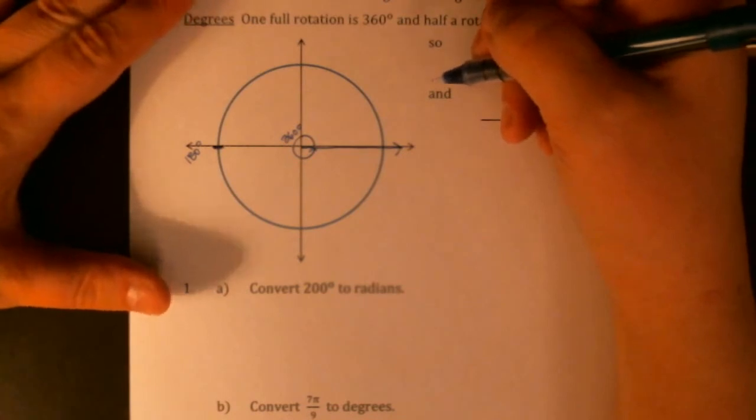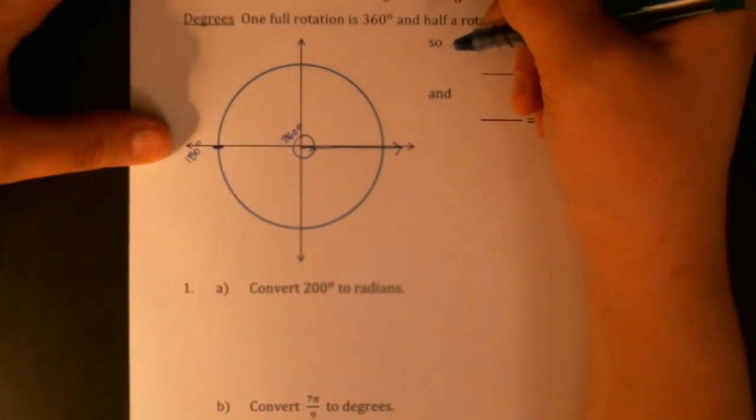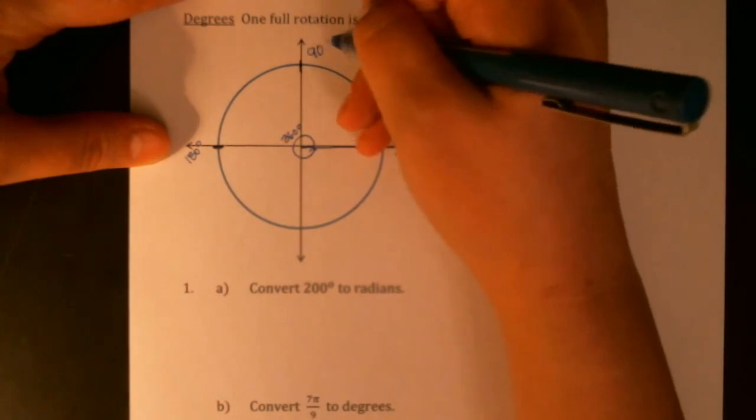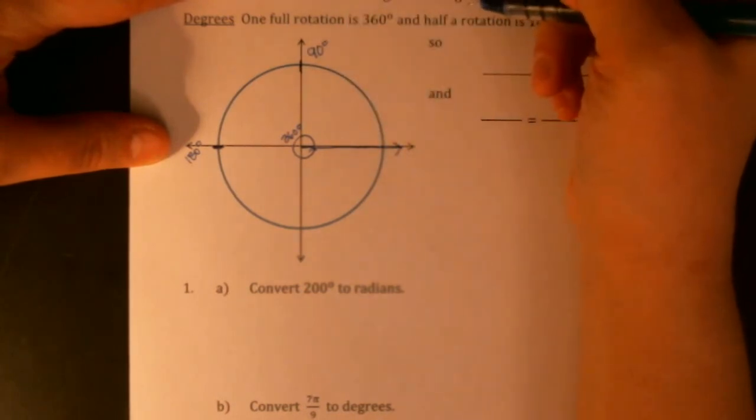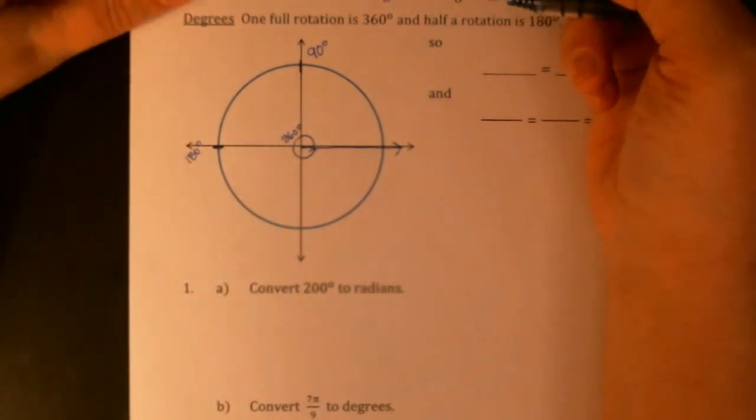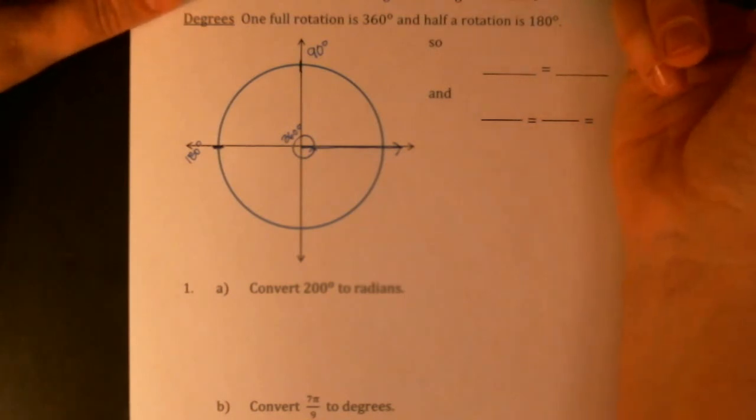So 180 degrees would point directly out the negative x-axis, and we could cut that in half again to figure out what angle would get us to point straight up the y-axis. That would be a 90 degree angle, otherwise known as a right angle, which will be a big one when we're talking about triangles.